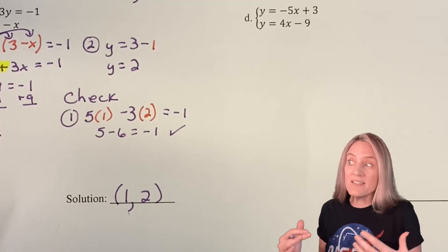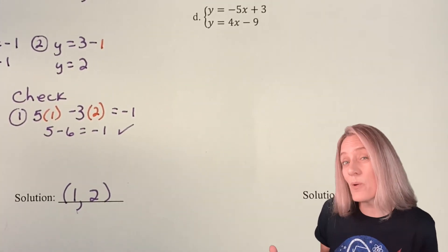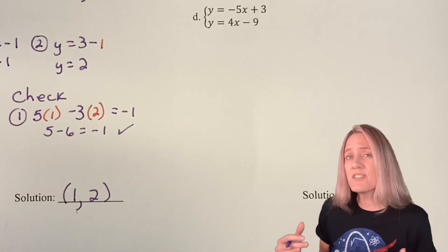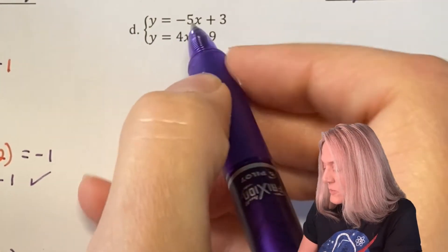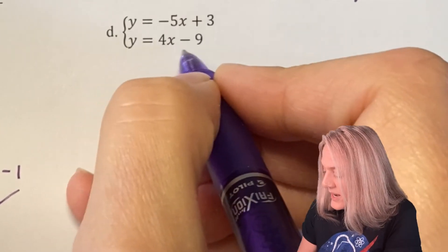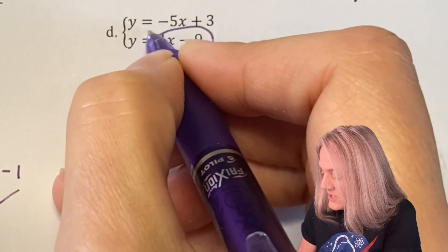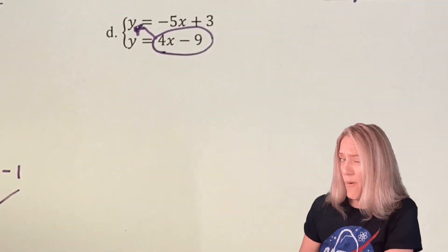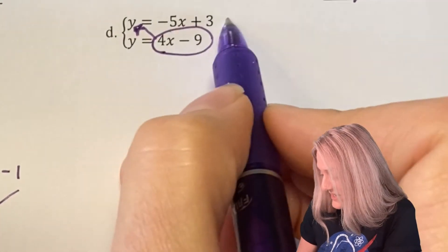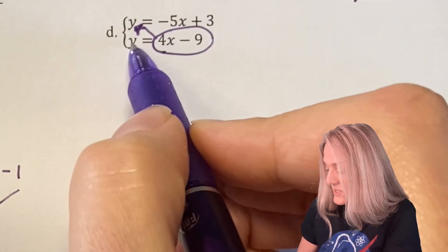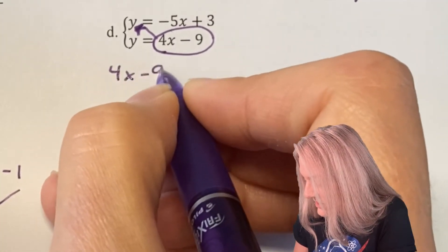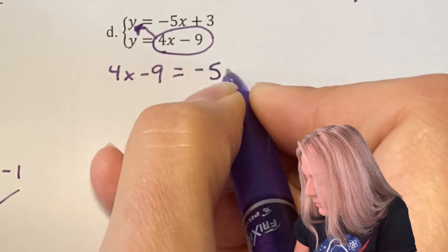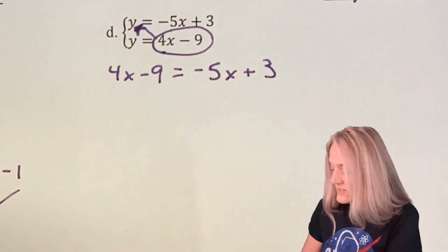Look at D. D is a fun one because D has both of them solved for y. I just substitute one value in for the other and it doesn't matter which way I go. Or if you really care to, take -5x + 3, substitute down there. The most important thing is to verify that these are now equal. If they both equal y, they equal each other and solve that equation.